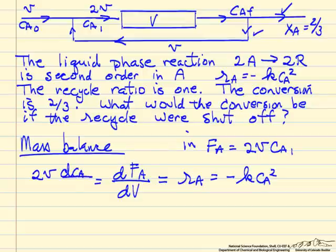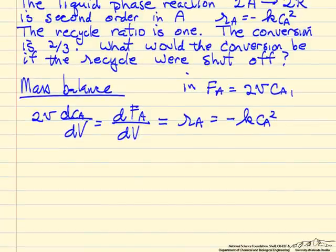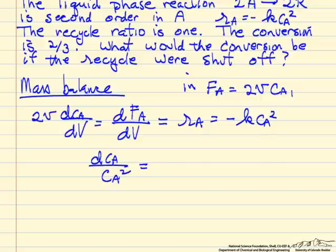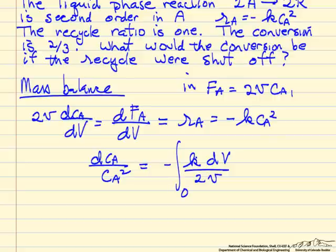We can rearrange, separate variables, so the change in the concentration of A over Ca squared is equal to minus the rate constant times dV over 2 times the volumetric flow rate. We integrate from the inlet of the reactor where the volume is 0 to the total volume V.